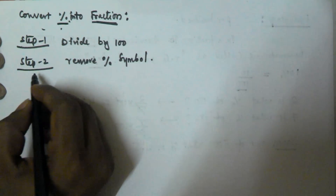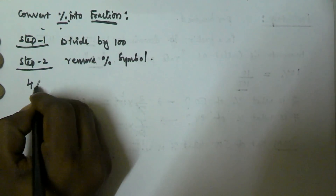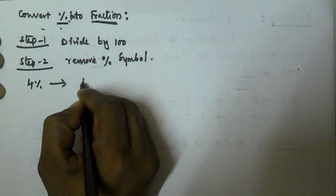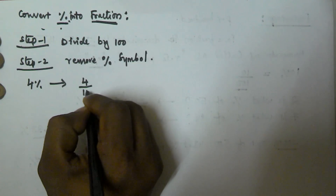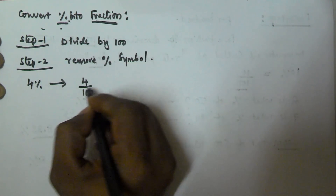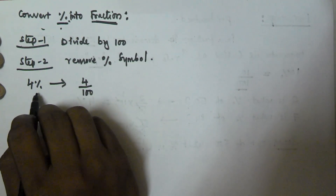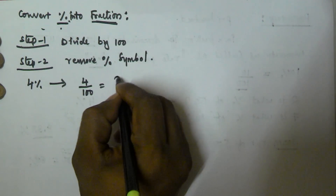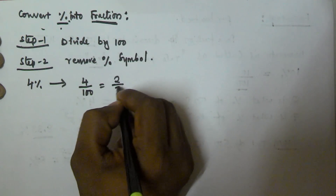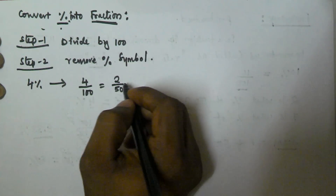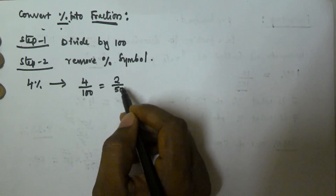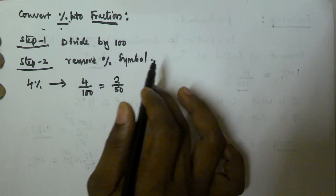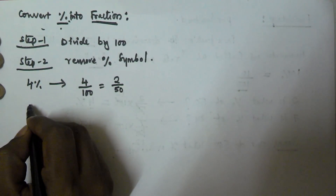Let's take one example. Convert 4% into a fraction. We divide 4 by 100 and remove the percentage symbol. This gives us 4/100, which is equivalent to 2/50. So 4% is equivalent to 2/50.